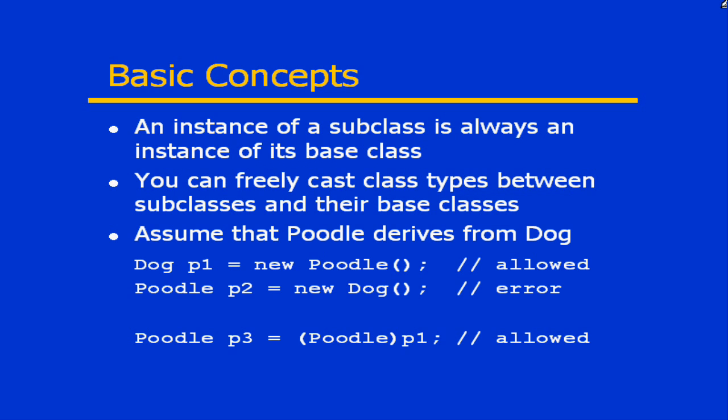It's important to understand before we go further into polymorphism some basic concepts of how objects are instantiated. An instance of a subclass is always going to be an instance of its base class. When you create an instance of a class, what you're actually creating is a chain of objects — an instance of that subclass and then its parent classes all the way up to the base class object. So every single class instantiation actually creates an instance of a set of classes.